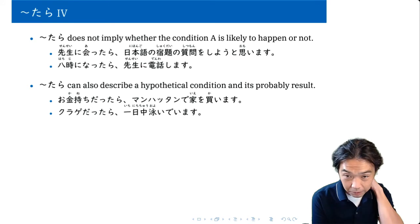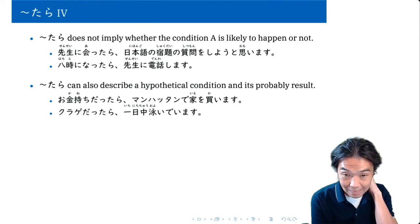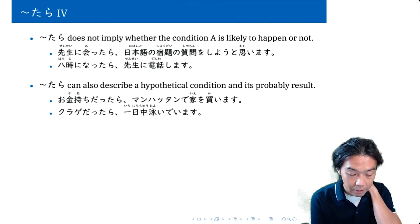So Tara doesn't indicate whether condition A is likely to happen or not. So it's perfectly neutral in a way. So you can say things like...